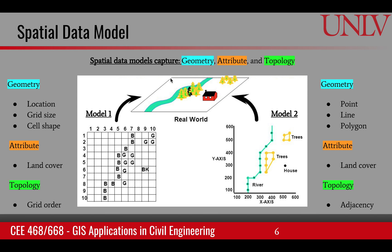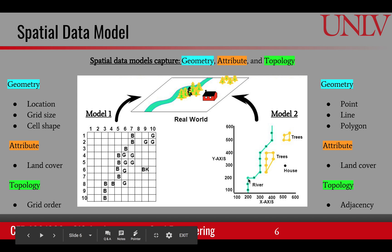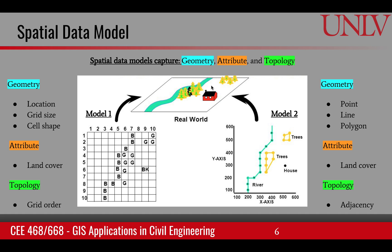Consider this example of the real world, where geometry, attribute, and topology can be captured in multiple ways. In one model, we create a grid on the surface and assign a value to each cell — for example, a cell might pick up B for blue, representing water such as a stream, or G for green, representing forest. Alternatively, a stream can be represented by connected dots forming a line, and a patch of forest by a closed area polygon.